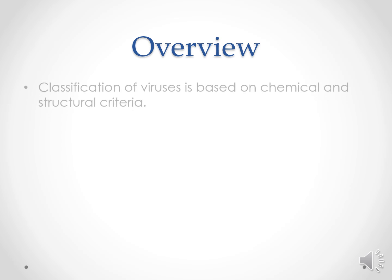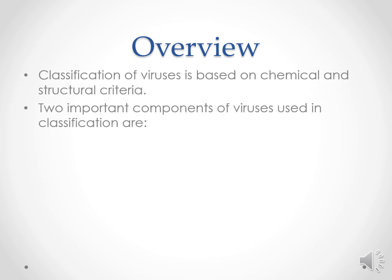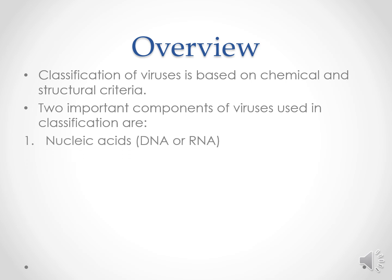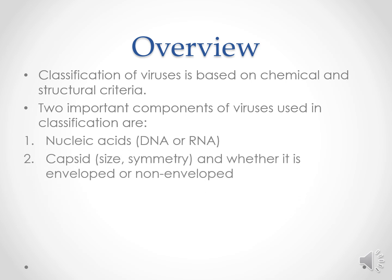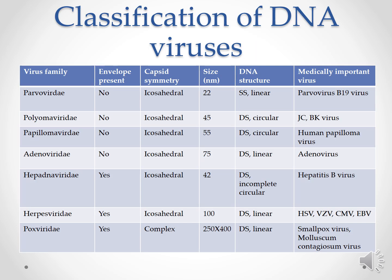Overview: classification of viruses is based upon chemical and structural criteria. Two important components of viruses are used: first is nucleic acid, which is either DNA or RNA; second is the capsid, by size or symmetry, or whether it is enveloped or non-enveloped.